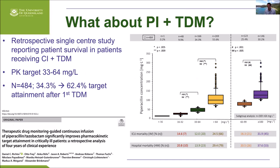I wanted to finish with a paper by Daniel Richter from the Heidenheim group in Germany, which looked at the combination of continuous infusion of piperacillin with therapeutic drug monitoring. They were able to double the number of patients achieving the PK target — a steady-state concentration of 33 to 64 mg/L. Patients who achieved that target had a statistically significantly lower hospital mortality as well as lower ICU mortality. This is a very interesting paper published in Infection.